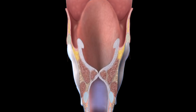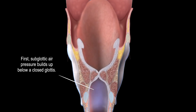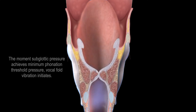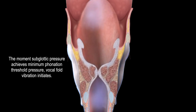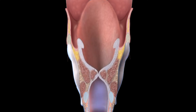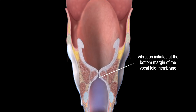Subglottic air pressure builds up below the vocal folds as air is pushed up from the lungs. The minimum air pressure required for initiation of vocal fold vibration is known as the phonation threshold pressure. The higher this pressure, the higher the potential for vocal hyperfunction. As the subglottic air pressure increases, it overcomes the resistance of the closed vocal folds, causing them to open slightly, beginning from the lower margin.